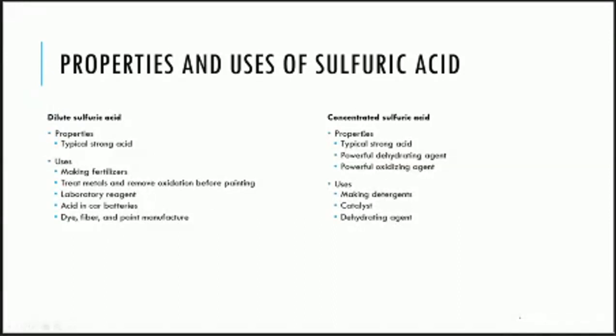Concentrated sulfuric acid has properties that include being a strong acid, a very powerful dehydrating agent, and a very powerful oxidizing agent. The uses would be similarly to make detergents. It can be used as a catalyst and also as a dehydrating agent — one of its key properties is that it is a dehydrating agent.